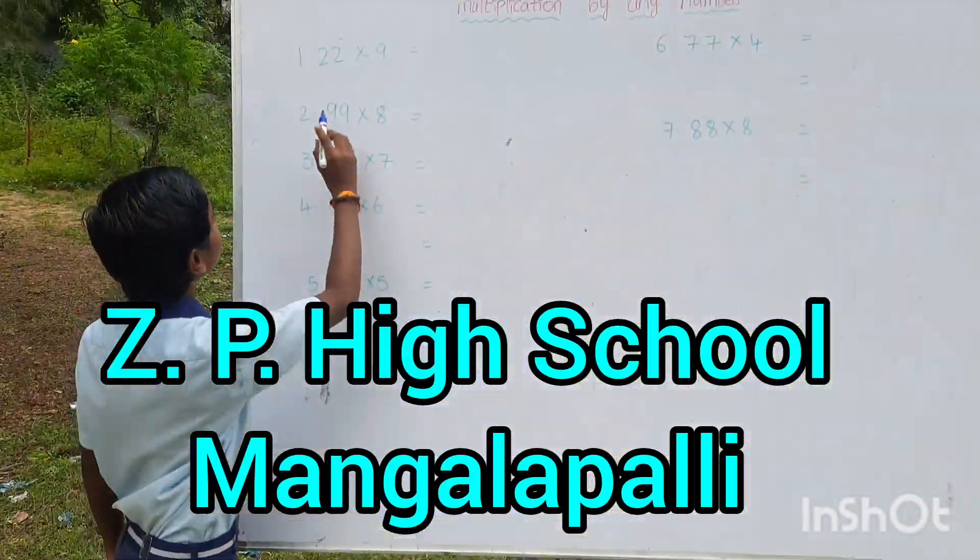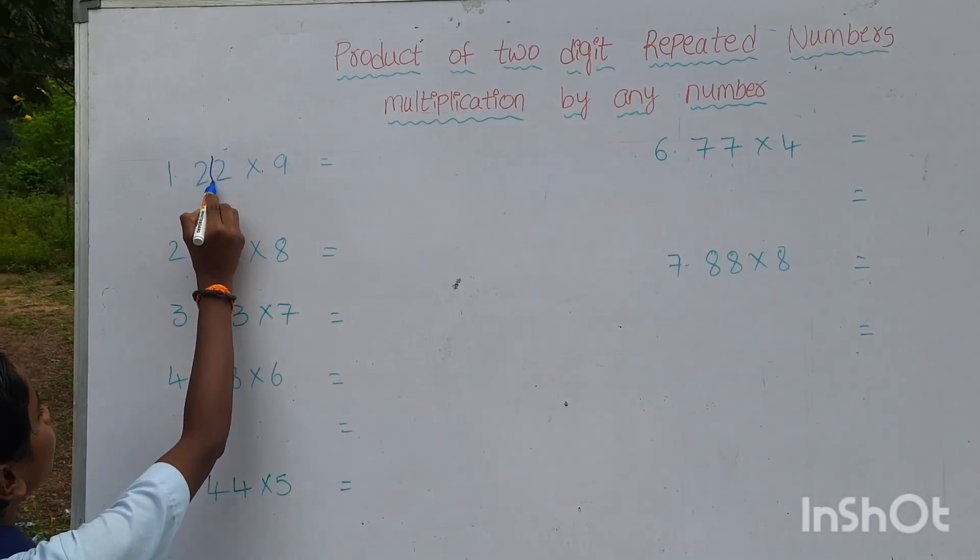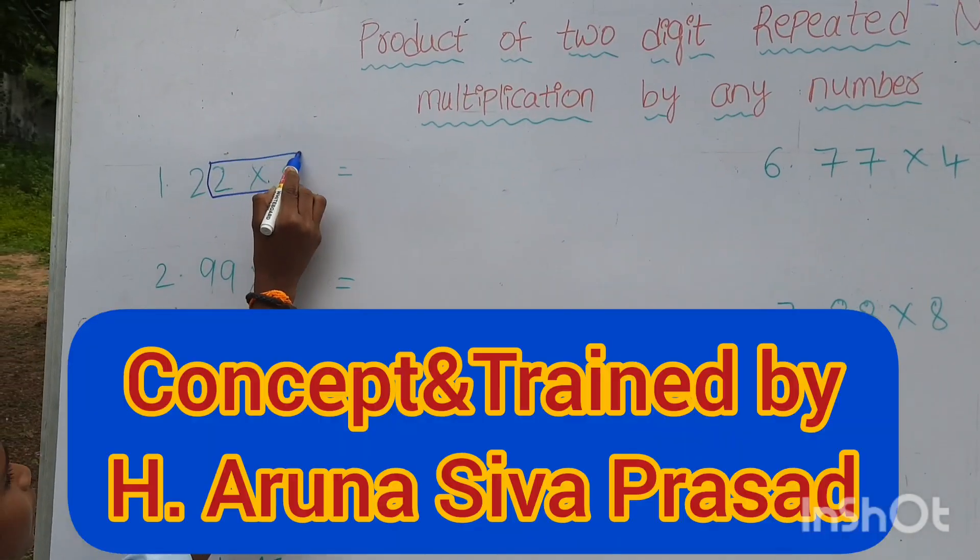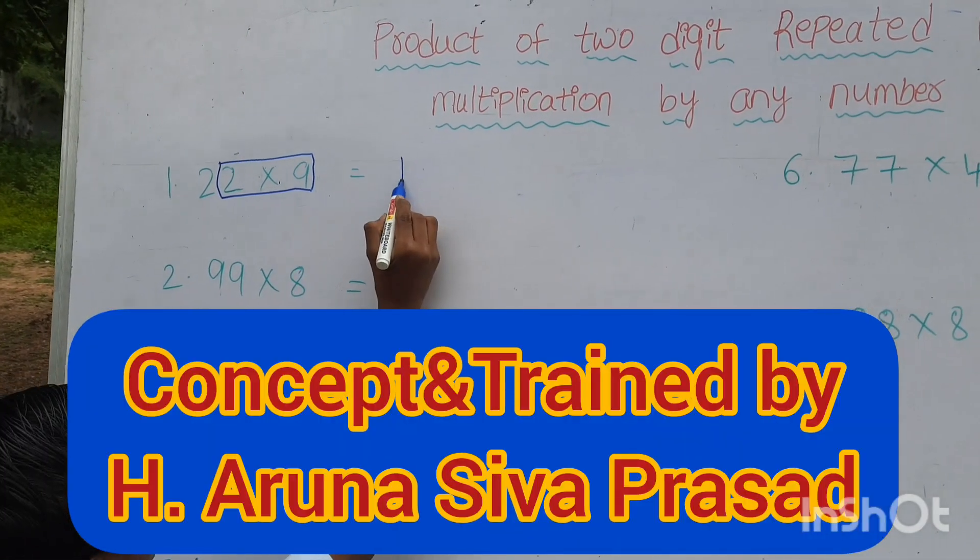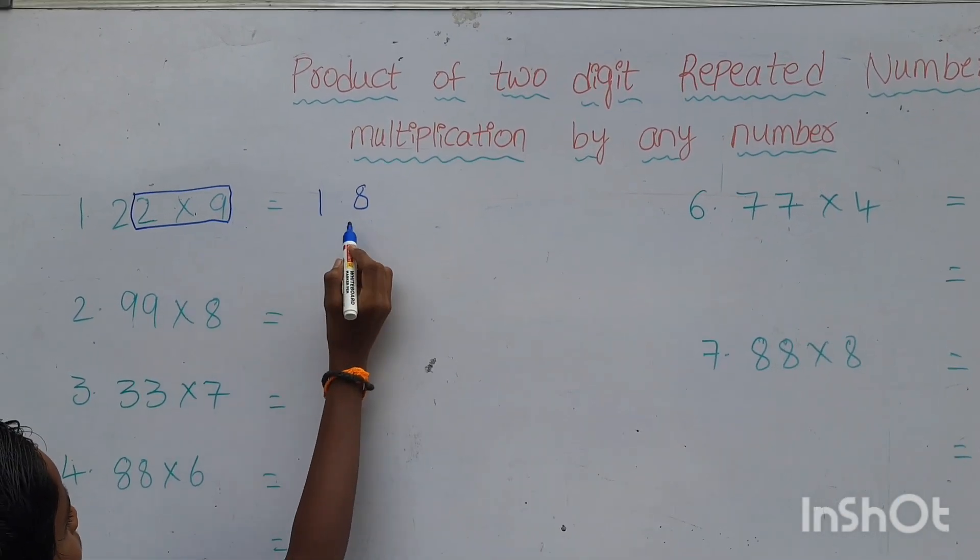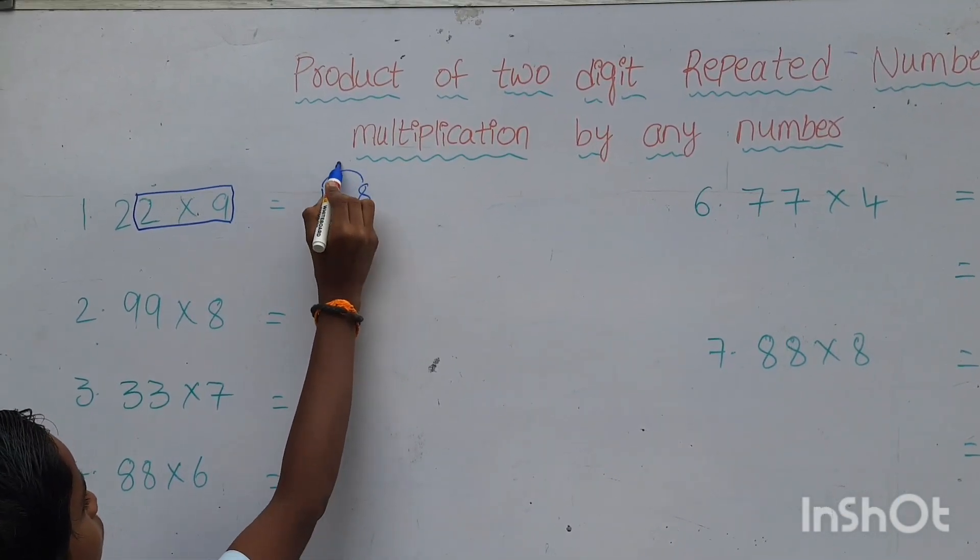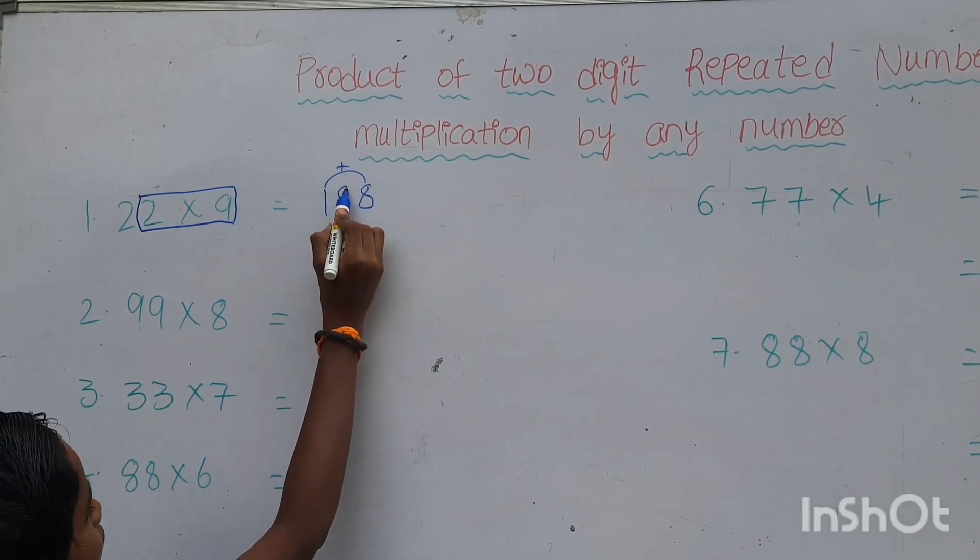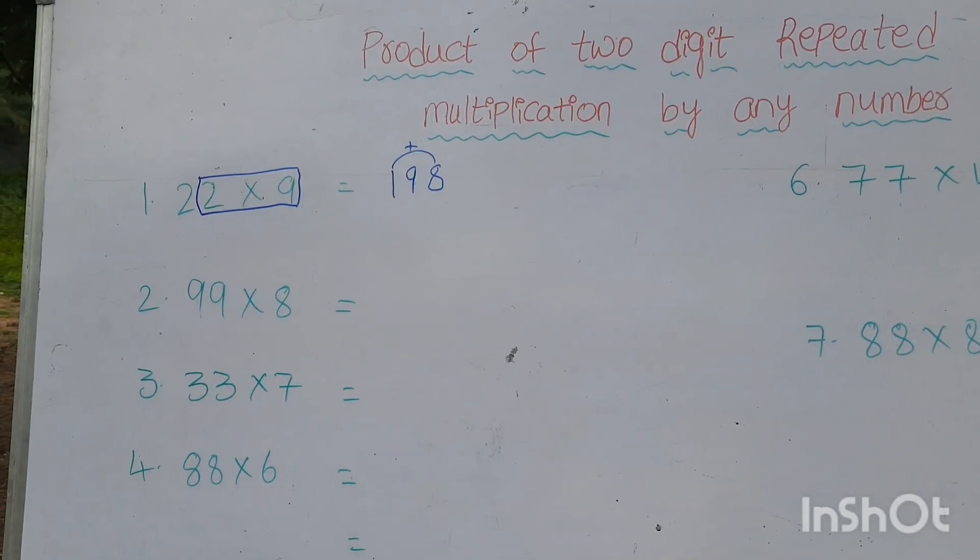Here is the first example. First one, 22 into 9. We want to multiply these both numbers. Two 9s are 18. We want to add these both numbers. 1 plus 8 equals to 9. The middle value is 9. 22 9s are 198.